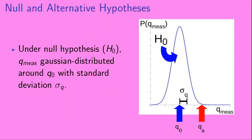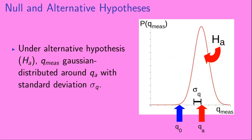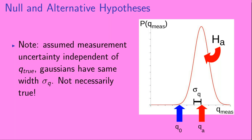Under the null hypothesis H0, Q measured is Gaussian distributed around Q0 with standard deviation sigma Q. Under the alternative hypothesis Ha, Q measured is again Gaussian distributed, but this time around Qa, also with standard deviation sigma Q. We've assumed that the measurement uncertainty is independent of the true value of Q, which is why both Gaussians have the same width sigma Q — though this is not necessarily the case in a real-world example.